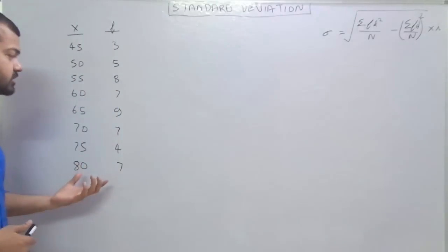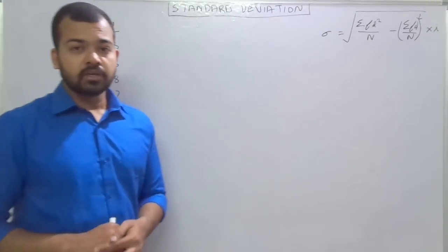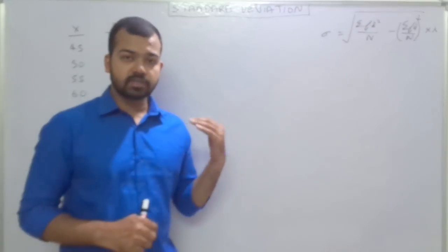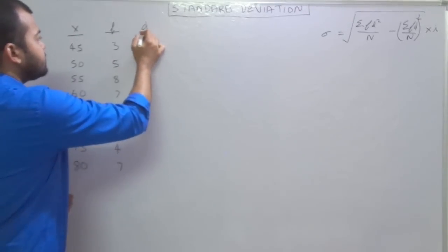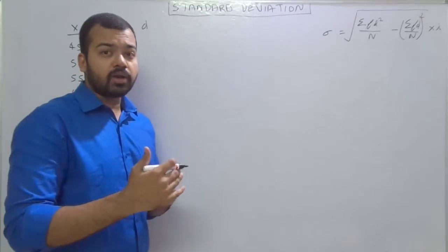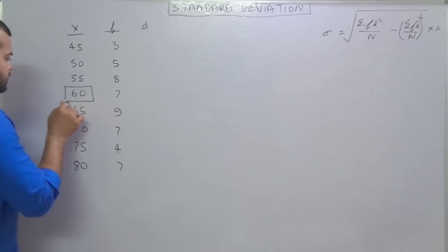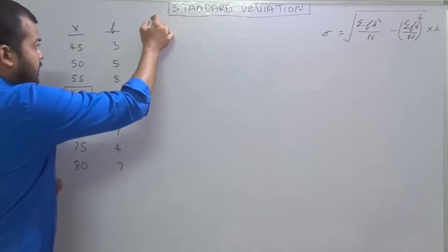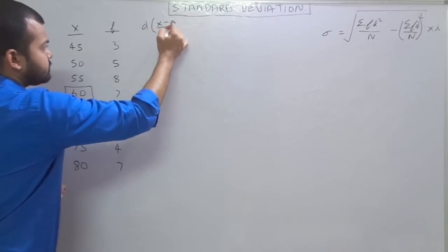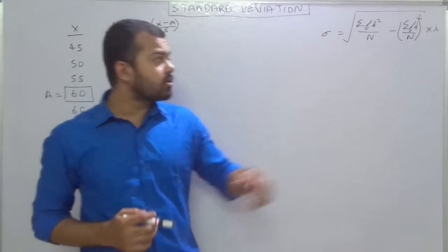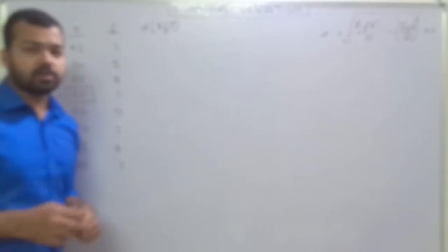So this is the discrete series given. The same steps we have to use for the step deviation method — there is a little difference between this and the last video. First of all we have to calculate the deviation from an assumed mean. So the first step is you have to assume some value. Here we are assuming 60 as the assumed mean, so your formula will be x minus a upon 5. We use 5 because we later multiply by this class interval, to reduce our calculation using the step deviation method.